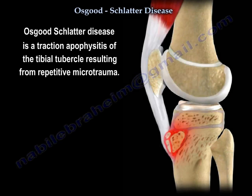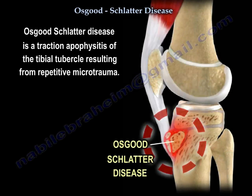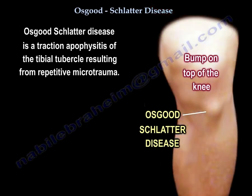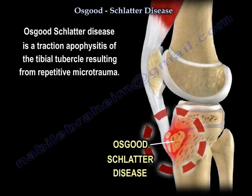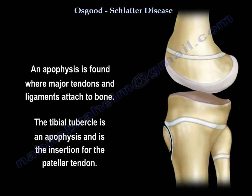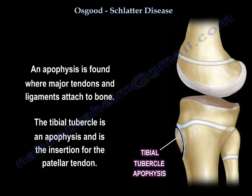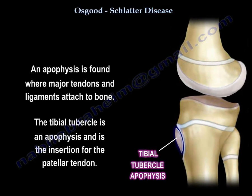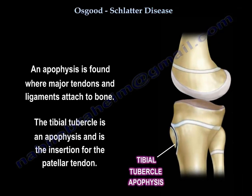Osgood-Schlatter disease is a traction apophysitis of the tibial tubercle resulting from repetitive microtrauma. It is an overuse syndrome that results in inflammation of the insertion of the patellar tendon on the tibial tubercle. An apophysis is found where major tendons and ligaments attach to bone, as you can see here. The tibial tubercle is an apophysis and is the insertion for the patellar tendon.